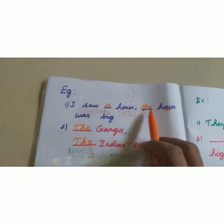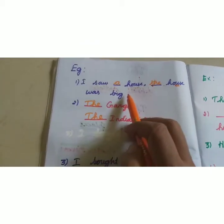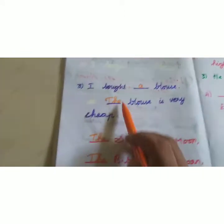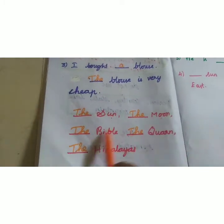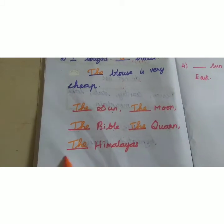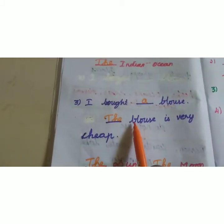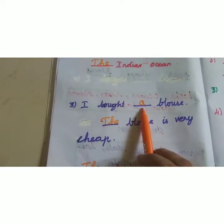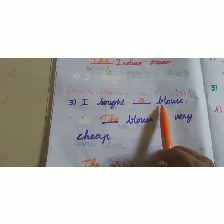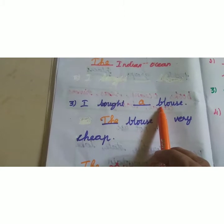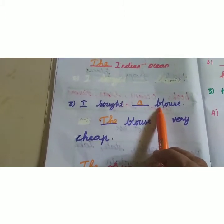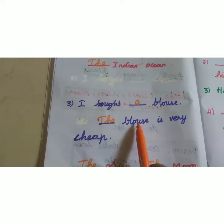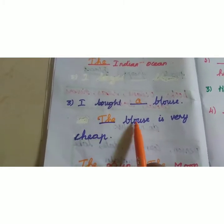The blank — house was big: 'The house was big.' THE is also used for the Ganga, the Indian Ocean, the sun, the moon, the Bible, the Quran, the Himalayas. Another example: 'I bought a blouse' — B is a consonant, so write A. Second time: 'The blouse is very cheap' — use THE.